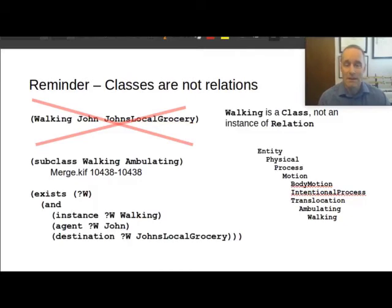So here's an example of how you're supposed to do this, and how you can conform to the type requirements that are already in SUMO. Again, since we use this Davidsonian semantics approach, we define an instance of walking and we say that the agent of the walking is John and the destination is John's local grocery. This gives you a lot more specificity and a lot more extensibility for the things that you say about actions. So the upshot of this is, understand the types. Walking is not a relation, therefore it can't be used as if it were a relation.